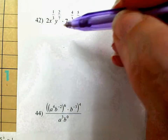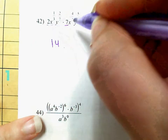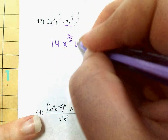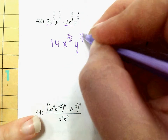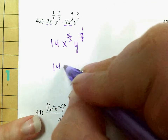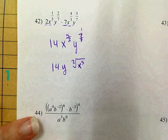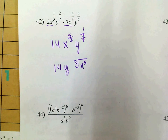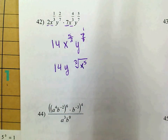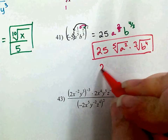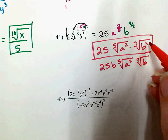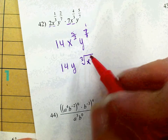On 42, I've got an expression I need to multiply. 2 times 7 is 14. I've got x to the 1 third and x to the 4 thirds — when multiplying with the same base, I add the powers: 1 third plus 4 thirds is 5 thirds. And 2 sevenths plus 5 sevenths is 7 sevenths, which is just 1. So I've really got 14y times the cubed root of x to the 5th.